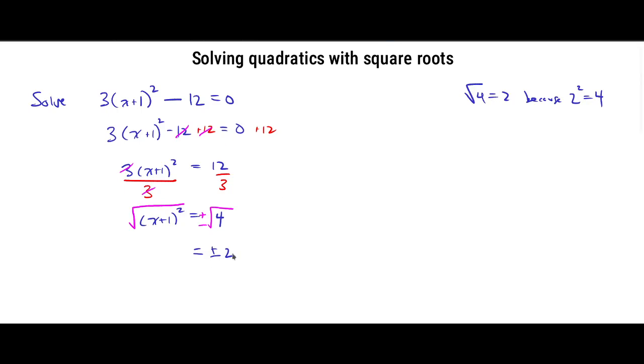So we got plus or minus 2 on the right hand side, and then the square root and the second power here cancel out. If we take the square root of a², this gives us a if a is bigger than 0. If a is negative, it would actually give us the absolute value of a. But in any case, this second power is going to cancel by the square root, so that leaves x+1 over here.